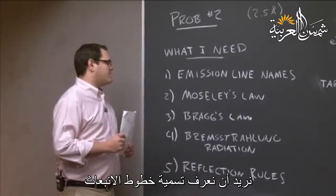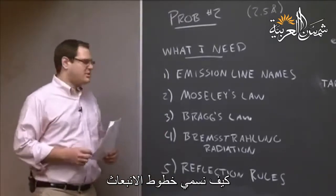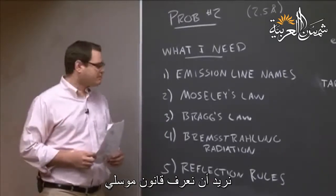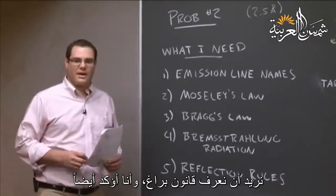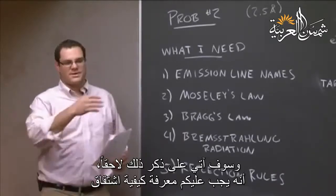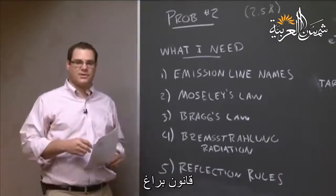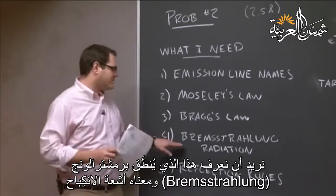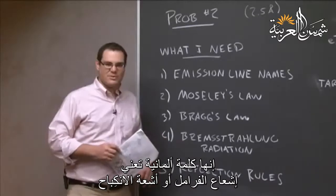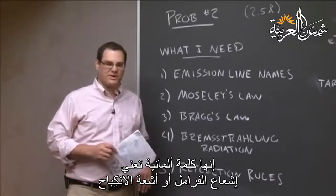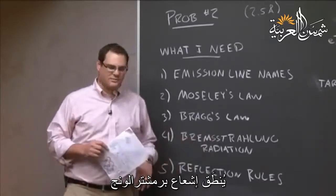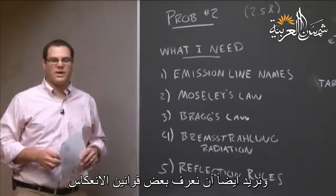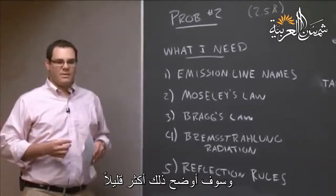We want to know emission line nomenclature — how to name emission lines. We want to know Moseley's Law. We want to know Bragg's Law, and also how to derive Bragg's Law. We want to know Bremsstrahlung — it's a German word which means breaking radiation. And we also want to know some reflection rules.